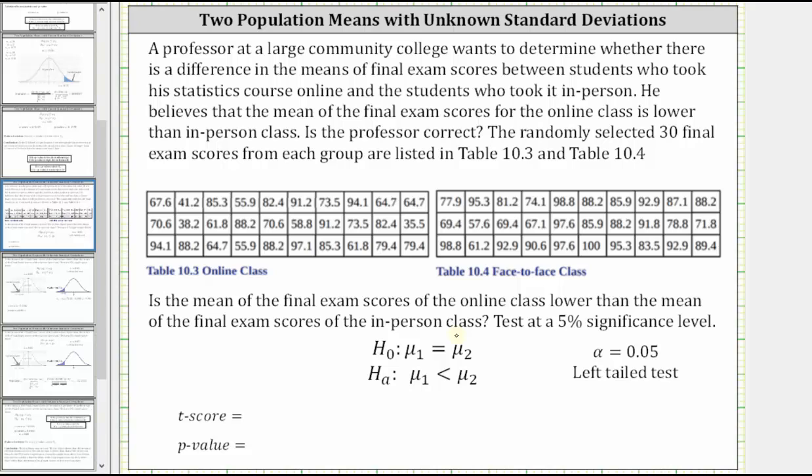Because the level of significance is 5%, alpha is equal to 0.05. And we have a left-tailed test because we're testing to see whether μ₁ is less than μ₂. Because we have unknown population standard deviations, we'll perform a two-sample t-test on the TI-84. So the test statistic is a t-score, and then we'll also find the p-value.